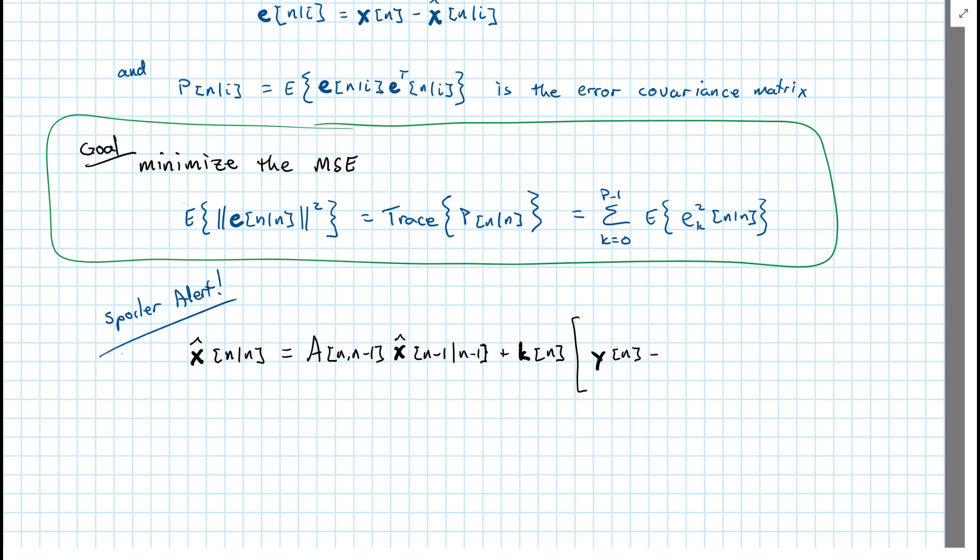So we're going to have a plus K times the error in our observation. Now we don't really know the error in the observation. But what we do know is the error based on the true observation minus what we thought we were going to get. So what did we think we were going to get? We thought we were going to get our previous estimate of the state updated to a current estimate of the state times the observation matrix C and then we subtract that from our real one. That tells us how far we were off.